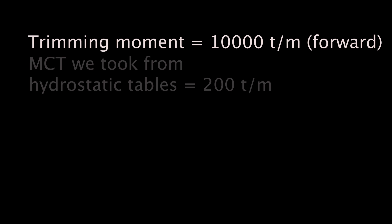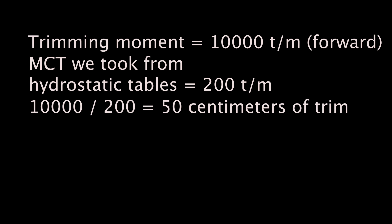For example, let's assume that MCT for the present situation equals 200 ton-meters. In this case, we should divide our trimming moment forward of 10,000 ton-meters by 200 ton-meters of MCT, and we will know that the trim is 50 centimeters forward.